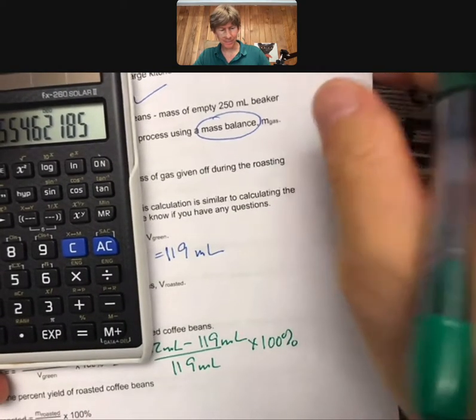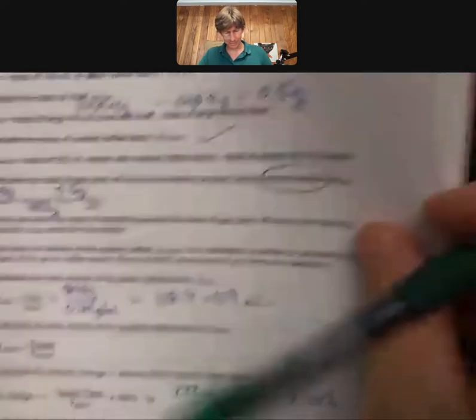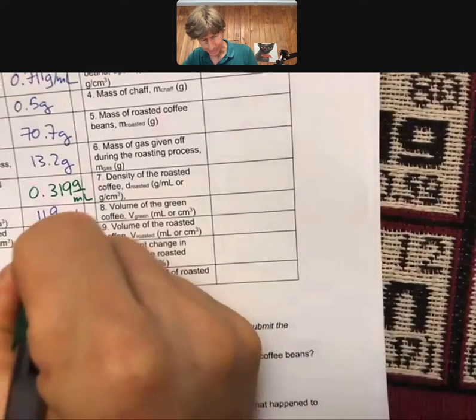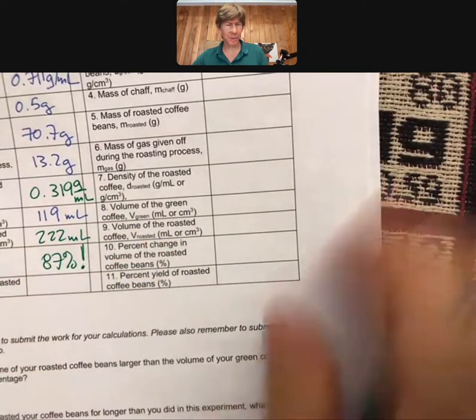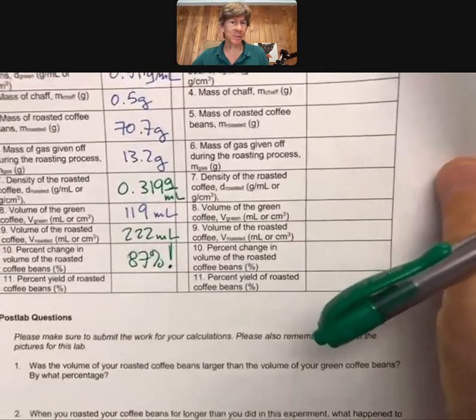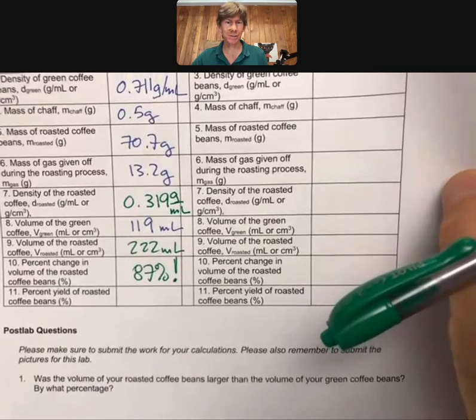So 87%, they're around to 87%. And I'm going to write an exclamation point there, because 100% would be doubling of the volume. So huge changes in volume.